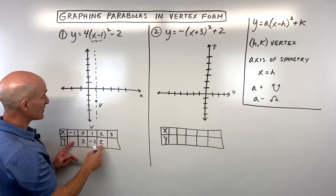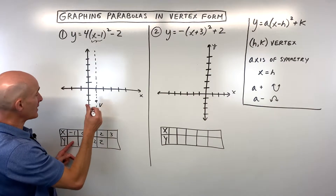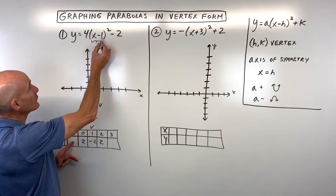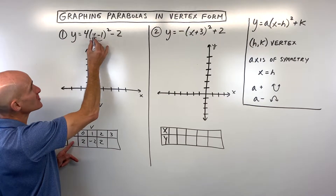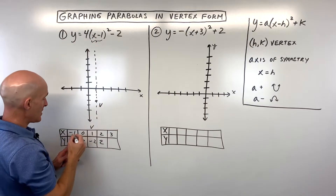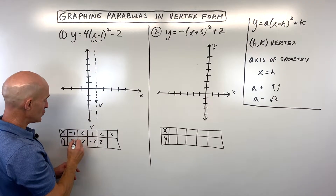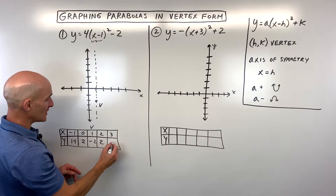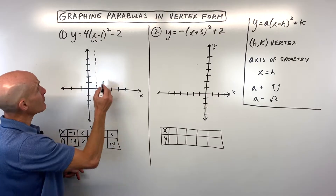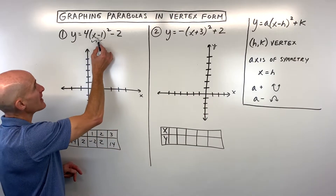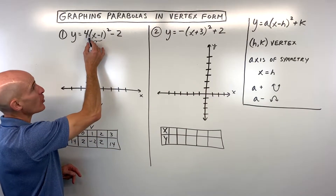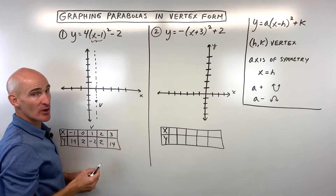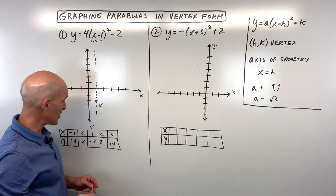If we put negative 1 in: negative 1 minus 1 is negative 2. Negative 2 squared is 4. 4 times 4 is 16. Minus 2 is 14. Remember to follow PEMDAS — parentheses, exponents, then multiplication. You want to follow that order of operations.